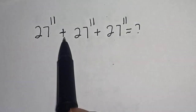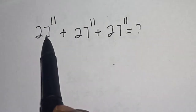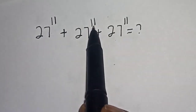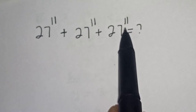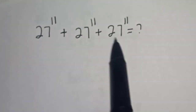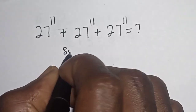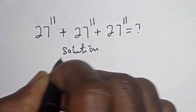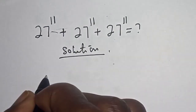Hi everyone, welcome to my class. In this class we want to evaluate this math problem: 27 raised to power 11, plus 27 raised to power 11, plus 27 raised to power 11 is equal to what. But before we proceed, please don't forget to like, share, comment, and subscribe.